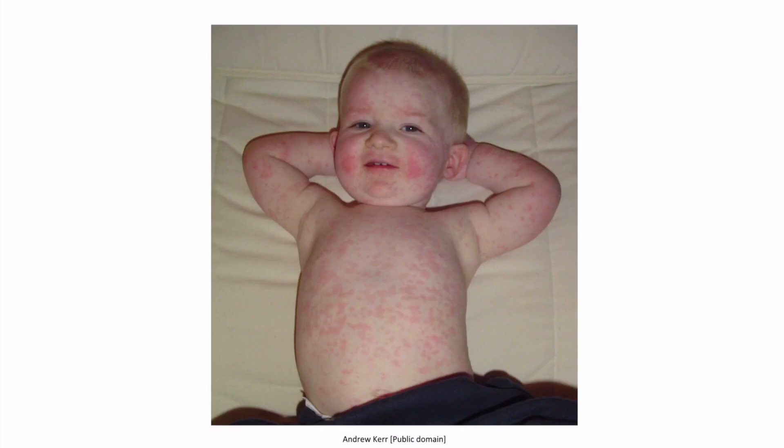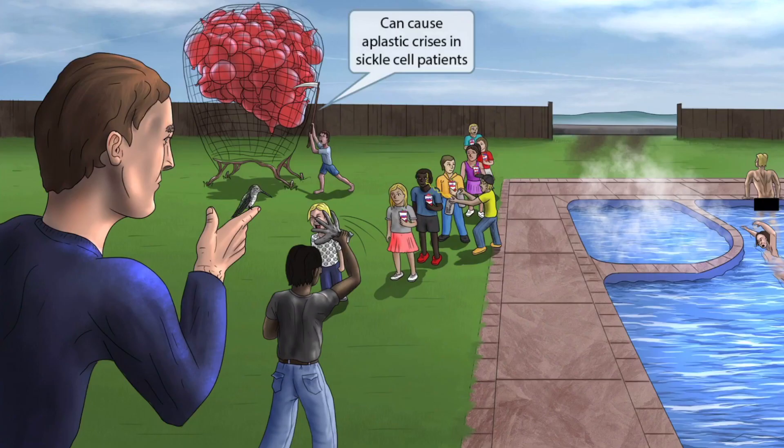This is an image of a child with fifth disease. As you can see, he has a slapped cheek appearance as well as a rash that has spread to his trunk and arms.